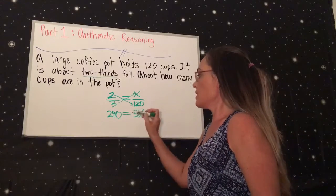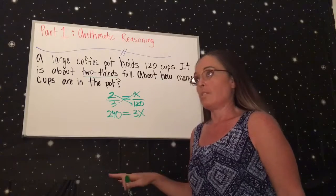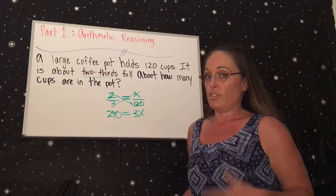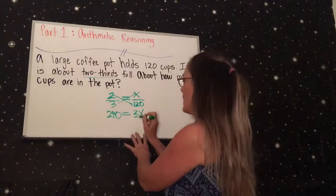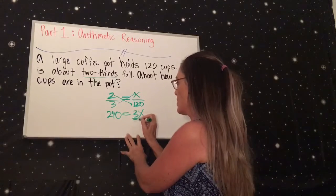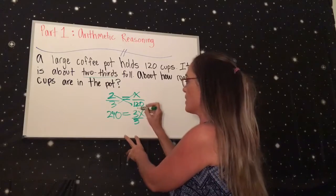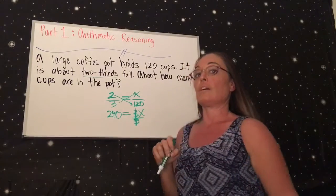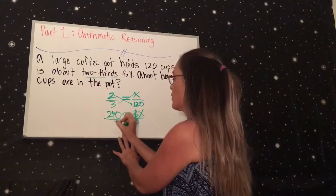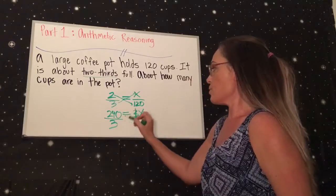So now after you cross multiply, you have 240 equals 3X. You need to get X by itself, always, all the time. You need to ask yourself, is X by itself? And if it's not by itself, then you're not done yet. So now you divide both sides by the number that's next to X, which is the 3. When I do it on this side, I have 3X over 3. Automatically it cancels itself out, so now we do have X by itself. Then we're going to take 240 and divide it by 3, and that answer will give us what X is.